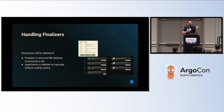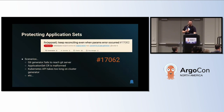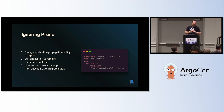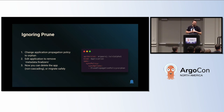If an application is deleted with cascade without an orphan policy set, you can actually ignore prune by editing the prune propagation policy and setting it to orphan. The other options are foreground and background, with foreground as the default. If you change your application propagation policy to orphan, when the application is deleted its resources will be left in place. Then you can edit the application, remove the finalizers, and delete non-cascading or migrate safely.